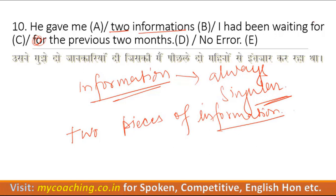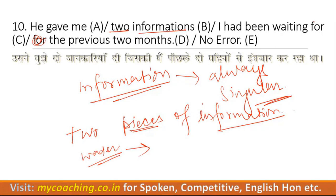When we use an uncountable noun, it has a different structure — like 'water.' We know that water is uncountable, but we can make it countable: for example, 'ek glass paani' (one glass of water).